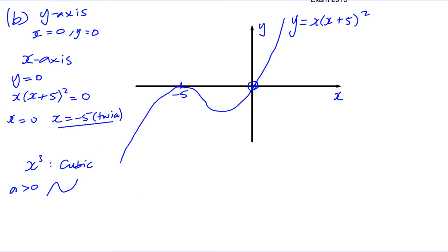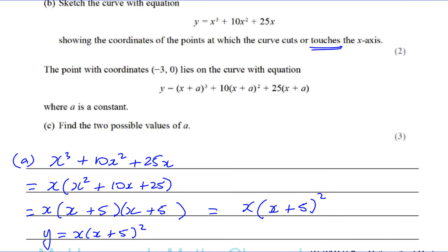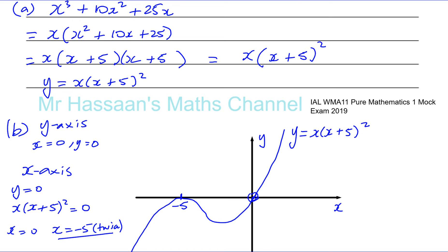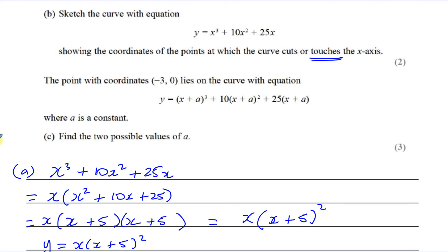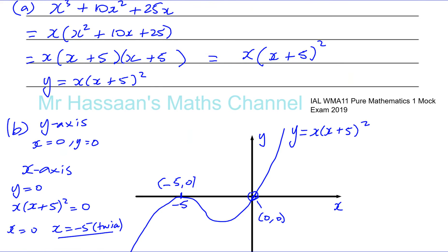Let's check what part B asked - sketch the curve showing the coordinates of the points at which the curve cuts or touches the x-axis. You could write this as (-5, 0) just to be clear, and (0, 0). But I don't think that's necessary - putting minus five there is fine. So that's basically part B done.